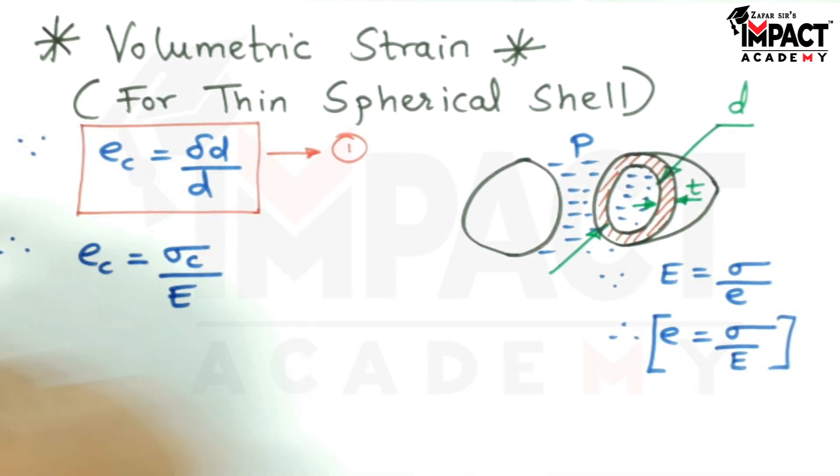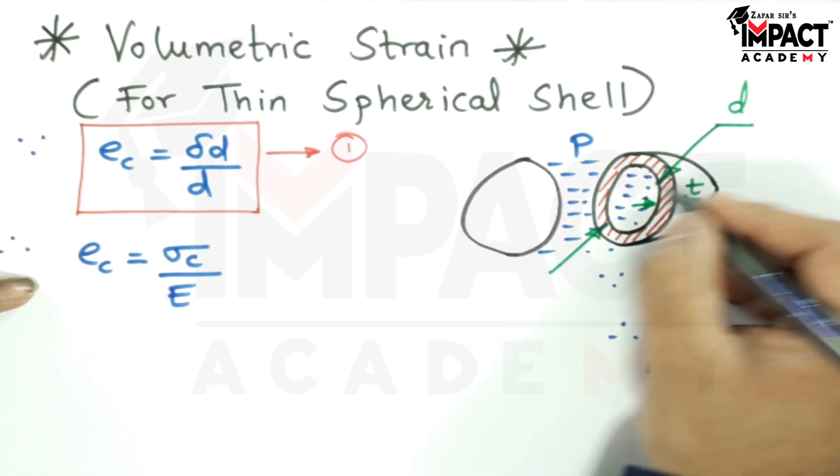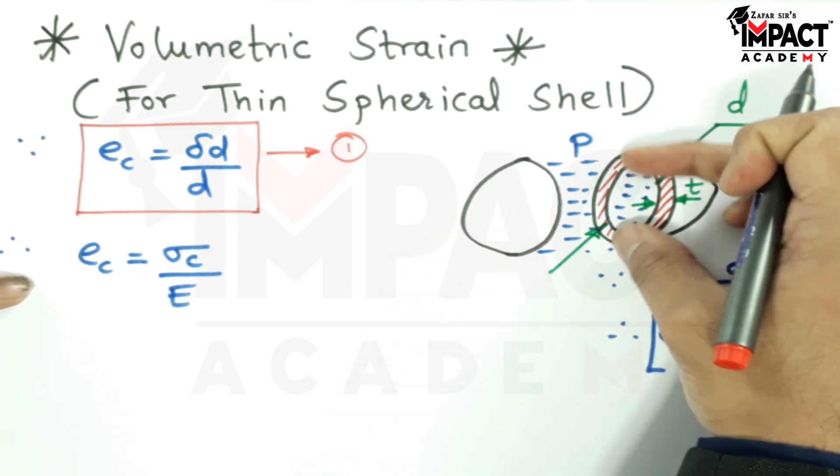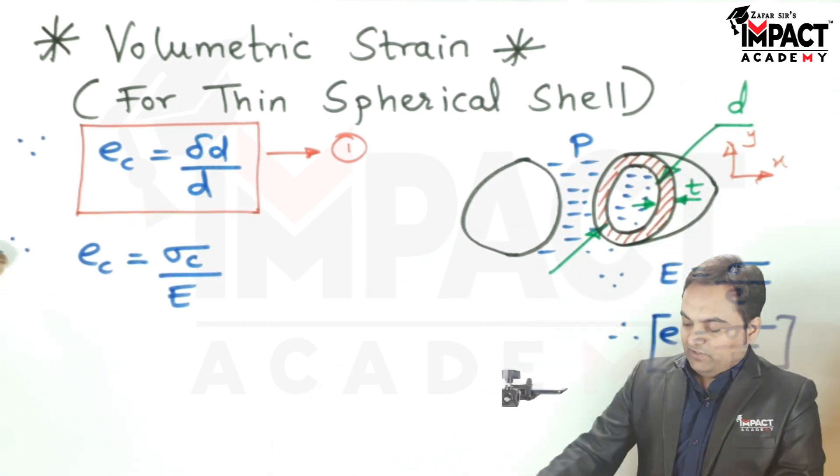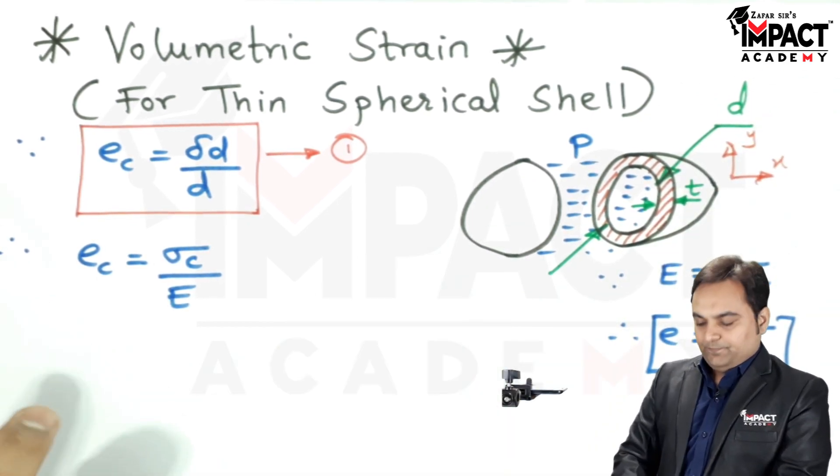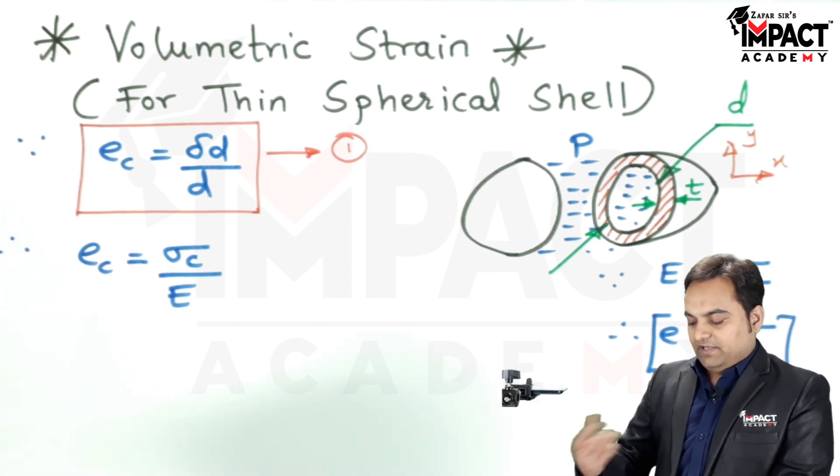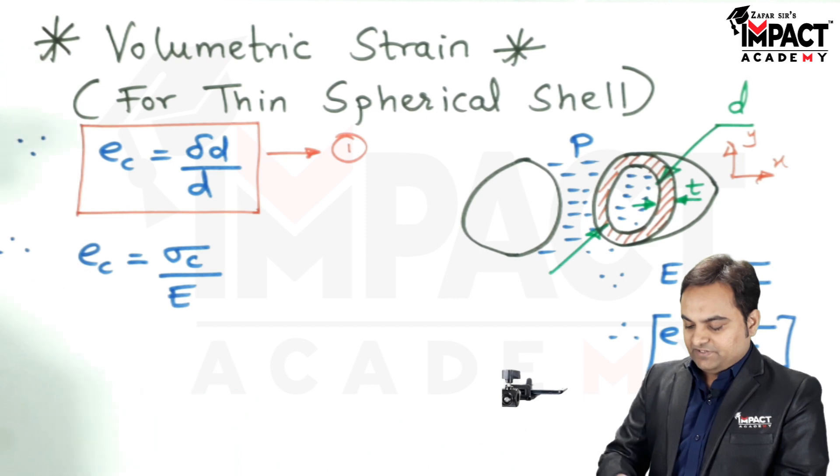Now, when we say this, suppose in x direction, if the diameter is increasing, then along y, it would be decreasing. So, when we are taking the circumferential strain on one end, the circumferential strain is increasing, then the other end, it would go on decreasing.